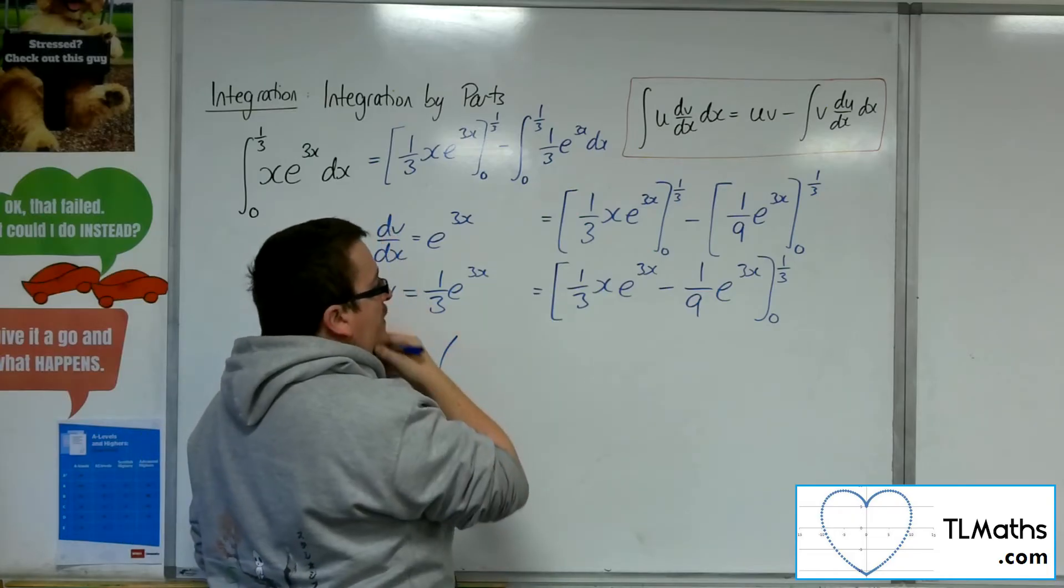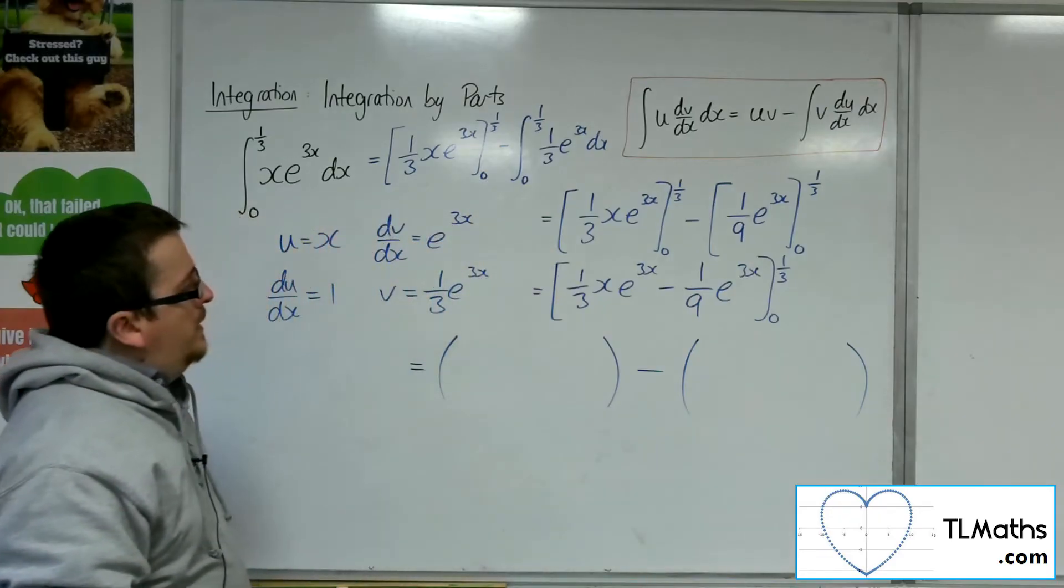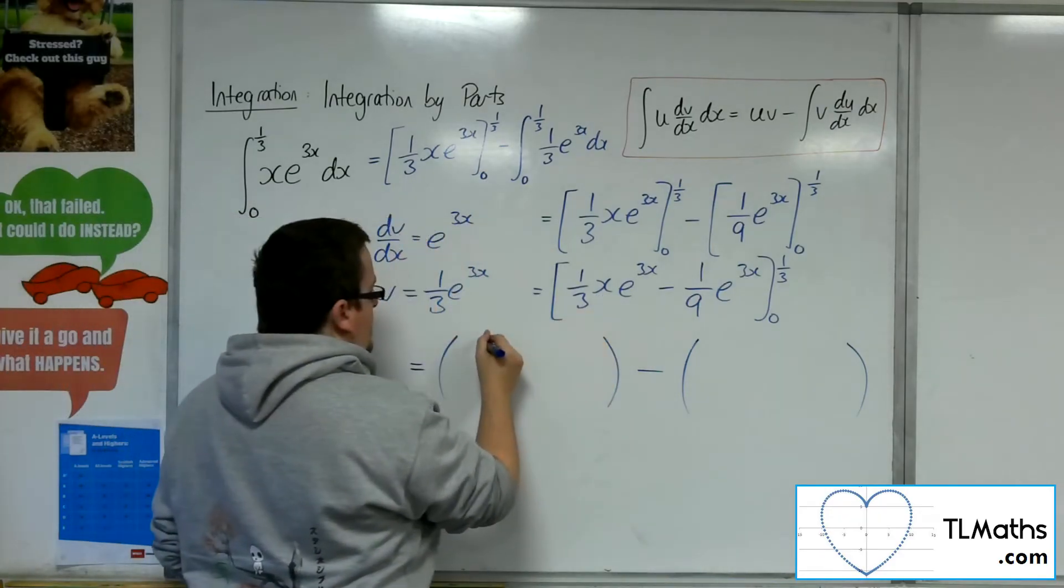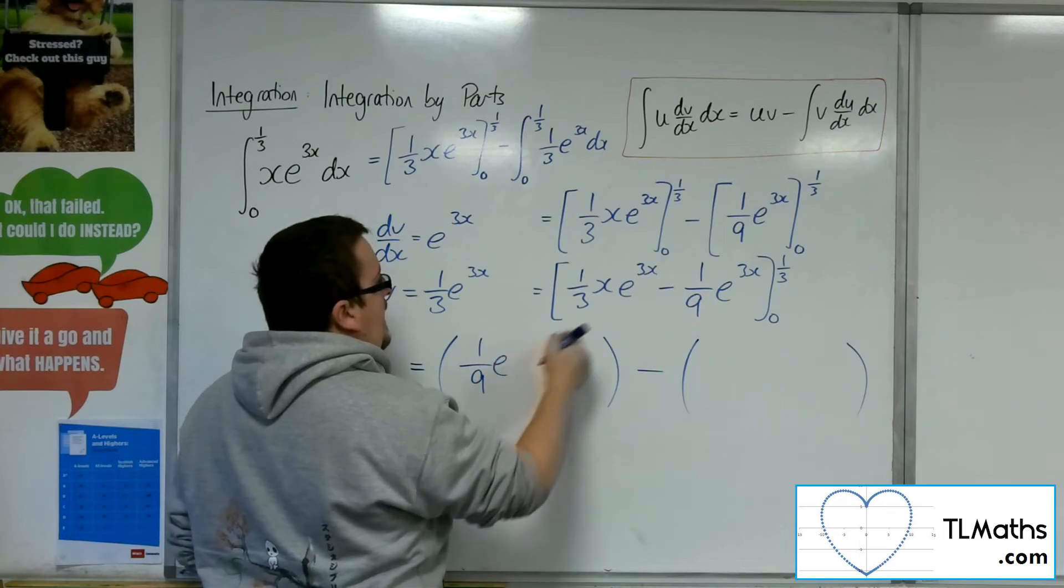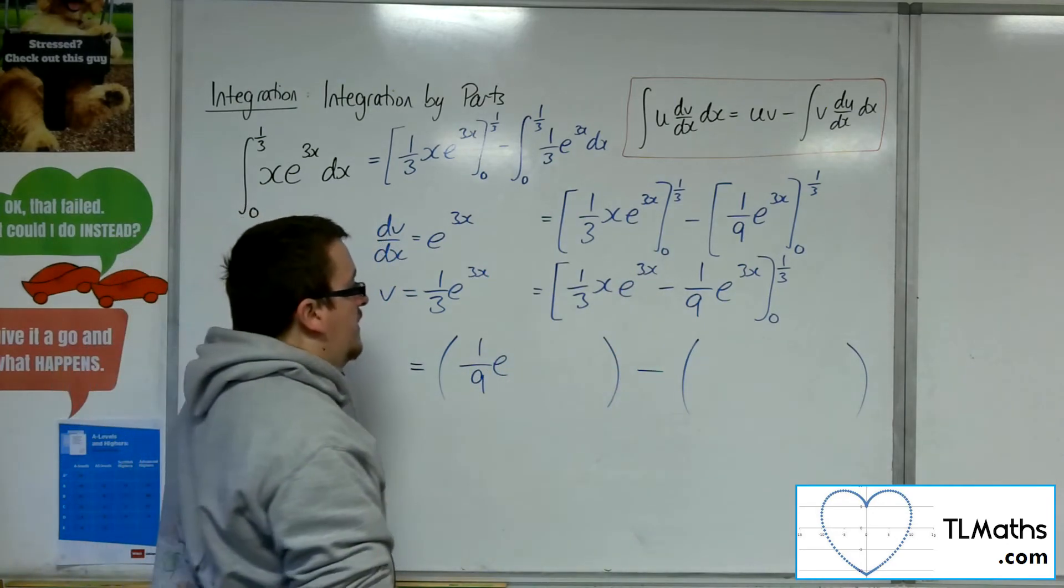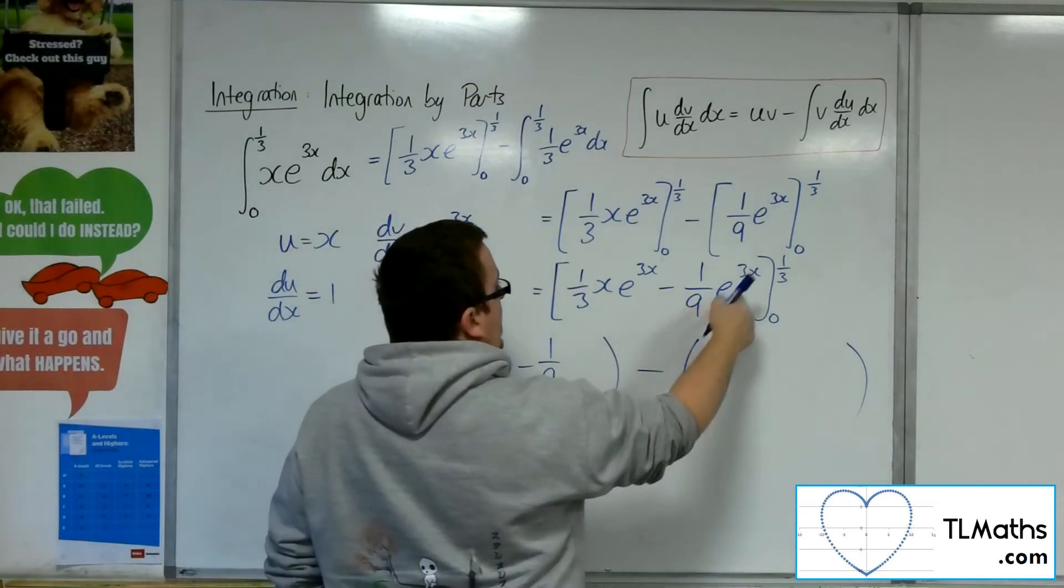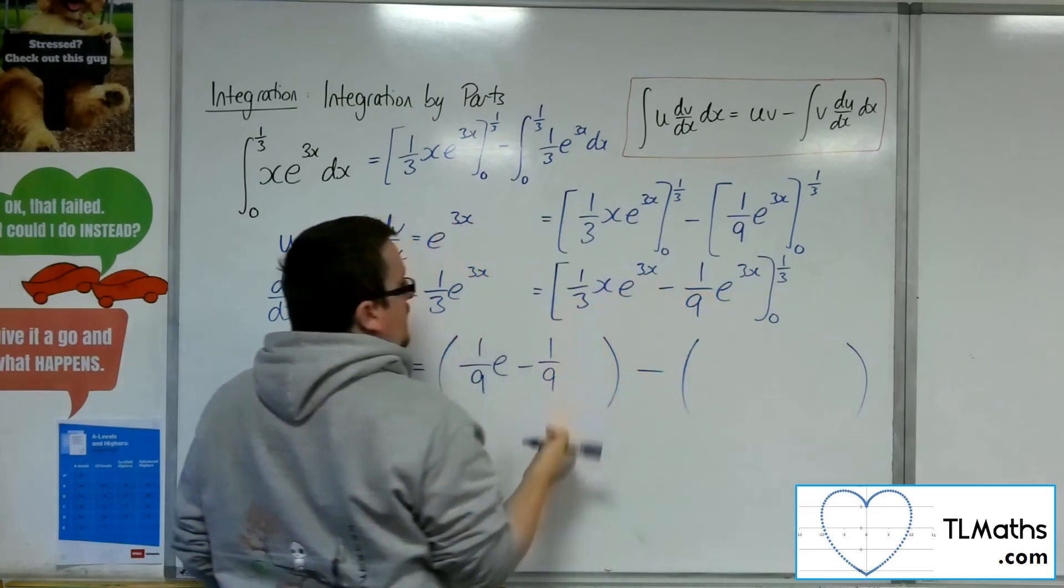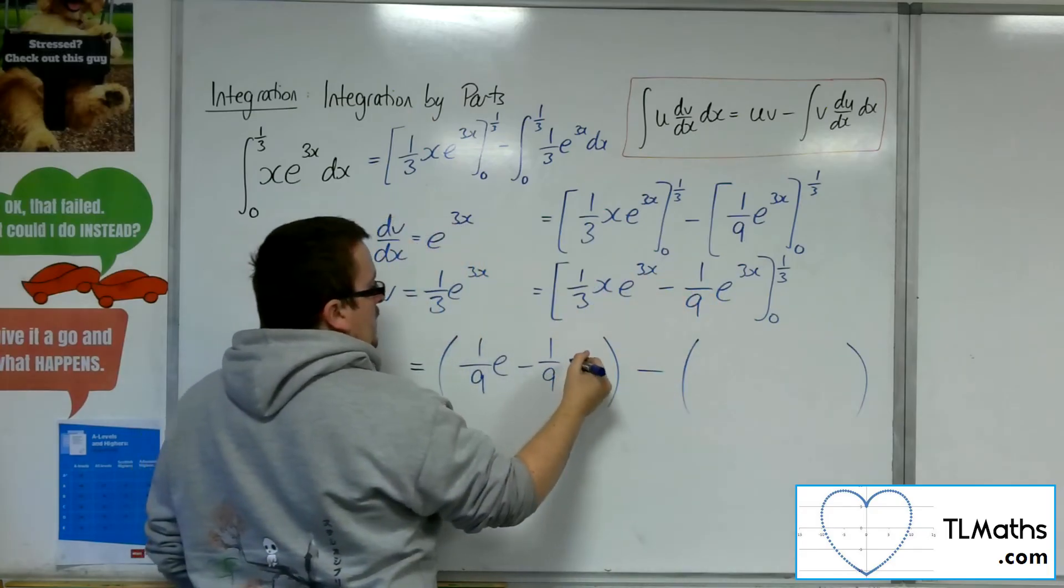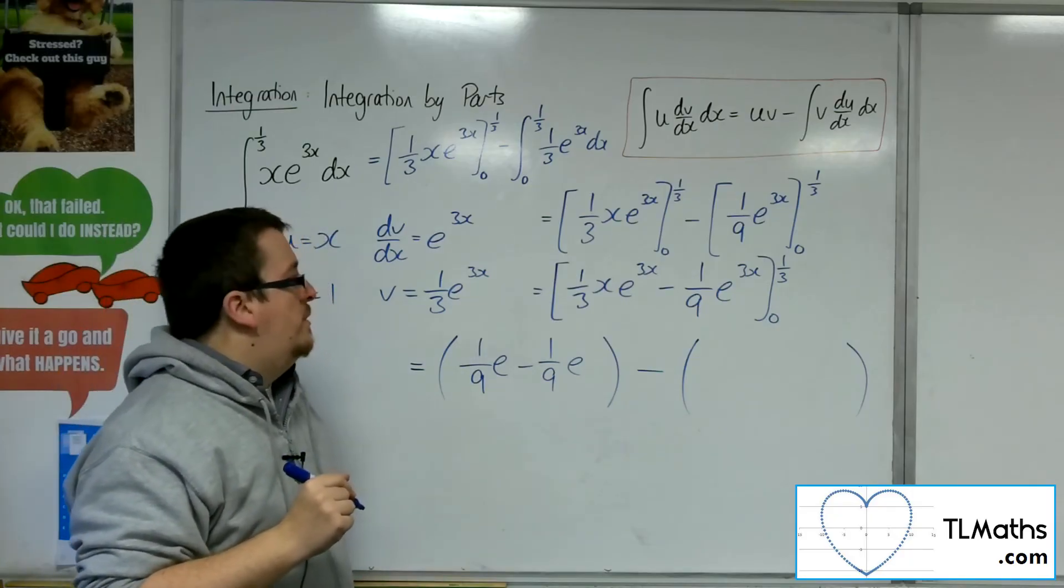So what are we doing? Well, we're just going to substitute in 1/3. What are we going to get? Well, 1/3 times 1/3, so 1/9 e to the 3 times 1/3, so 1, so 1/9 e. Take away 1/9 e to the 3 times 1/3, so e to the 1, so it's 1/9 e. 1/9 e take away 1/9 e, so that's going to be 0.